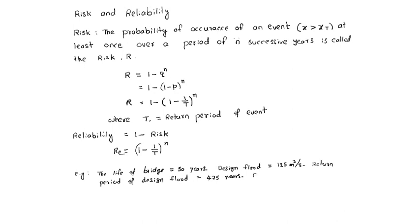Now, what is the Risk? Here, the life of the bridge N = 50 years, and return period T = 475 years. Knowing N and T values, we can find Risk = 1 - (1 - 1/475)^50, which equals 0.1 or 10 percent.